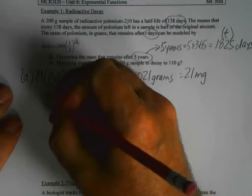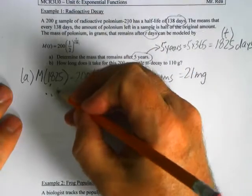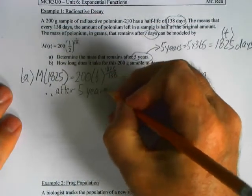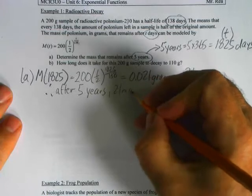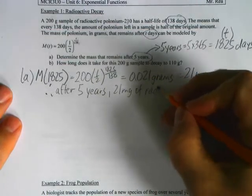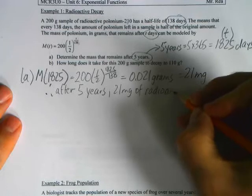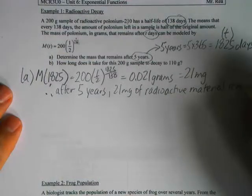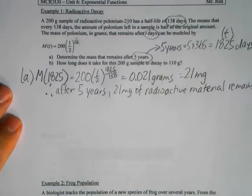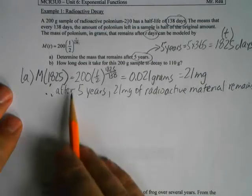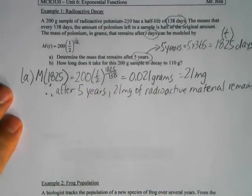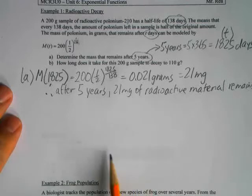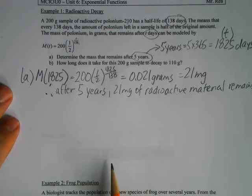Therefore, after five years, 21 milligrams of radioactive material remains. Notice I changed back to five years in the word answer, even though I used days in the calculation, because the question asked about five years — so answer the question the way it was asked.